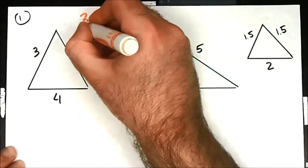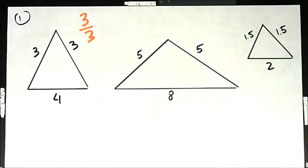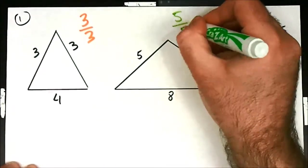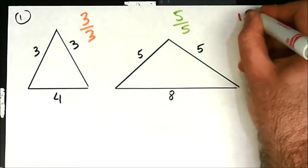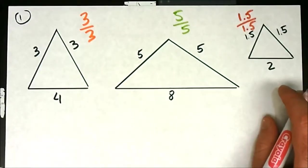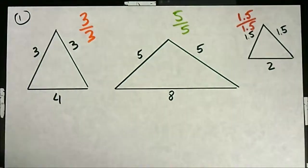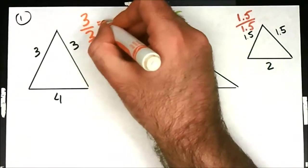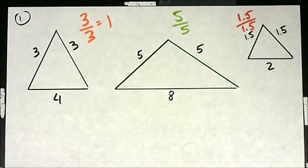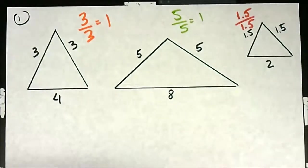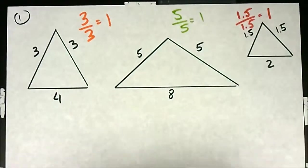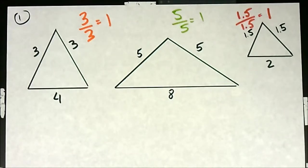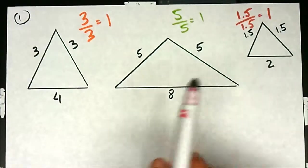First, I'm going to go 3 over 3, compare that with these two top sides, 5 over 5, and then 1 and a half to 1 and a half. What do those all simplify down to? They all simplify down to 1 — it's a 1 there, a 1 here, and a 1 for the last triangle as well. So if you compare the top sides and take those ratios, it would seem that all three triangles are similar.